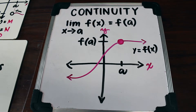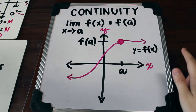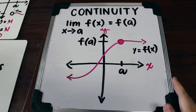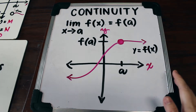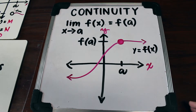So when can we determine if a function is continuous? A function is continuous at a point if and only if the limit as you approach that point is equal to the value of the function at that point. So in order for a function to be considered continuous at a point, it has to satisfy the following conditions.